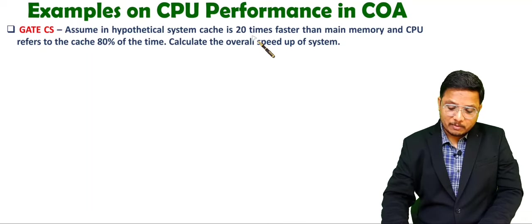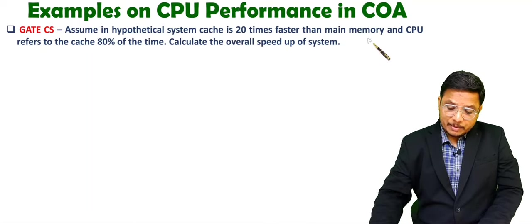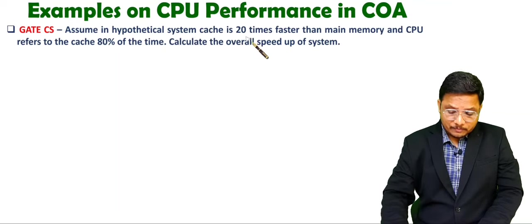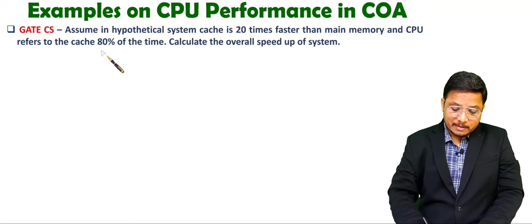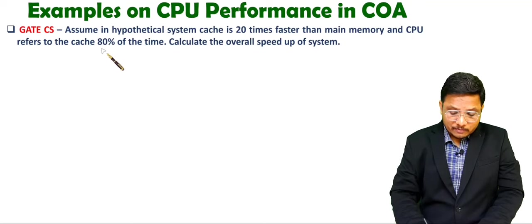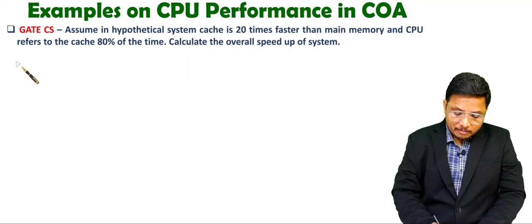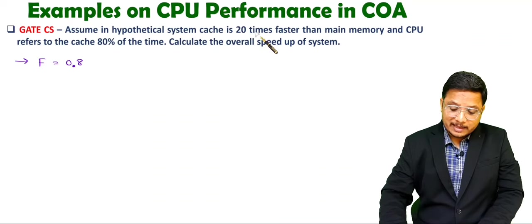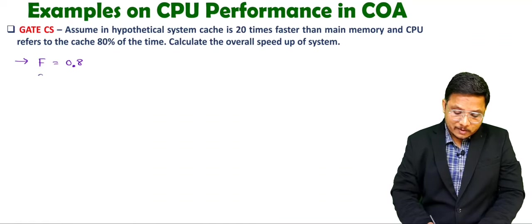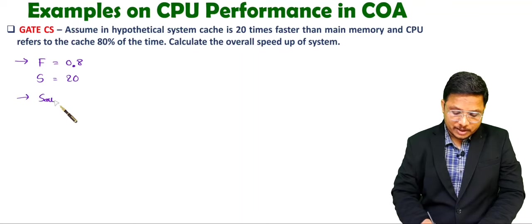So here, what is happening? The CPU is using cache memory which is 20 times fast, and CPU is accessing that by what fraction? 80% means F = 0.8, and when it uses by this fraction, the speedup by that cache memory is 20 times, so S = 20. The question is: what is the overall speedup?